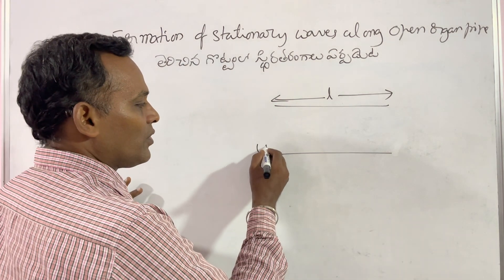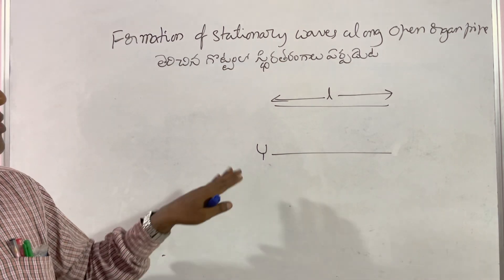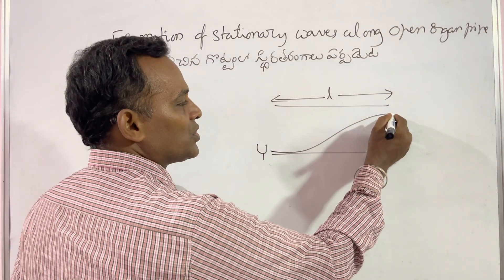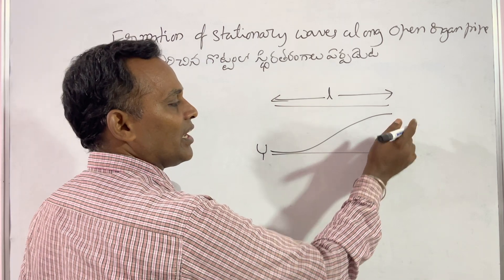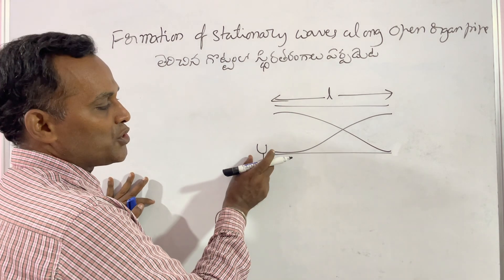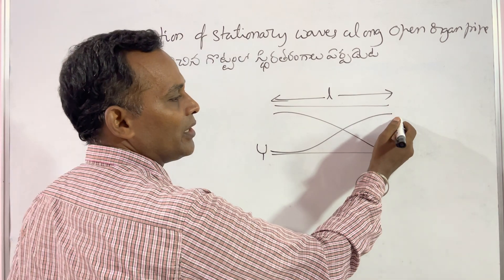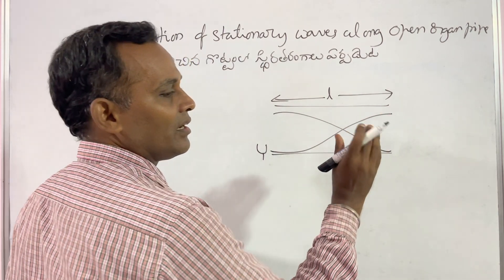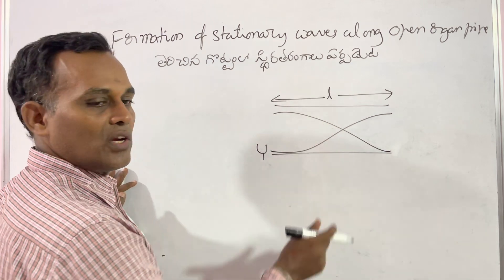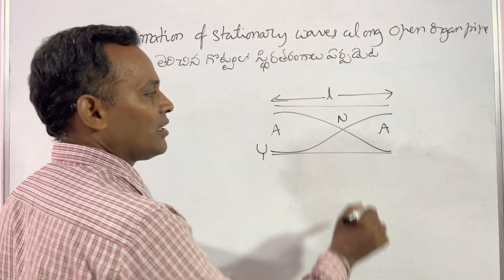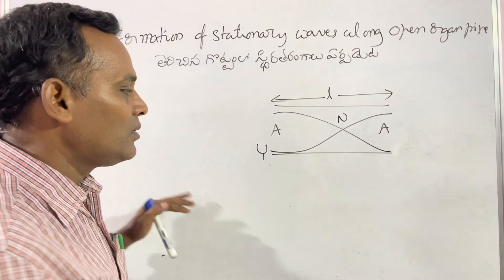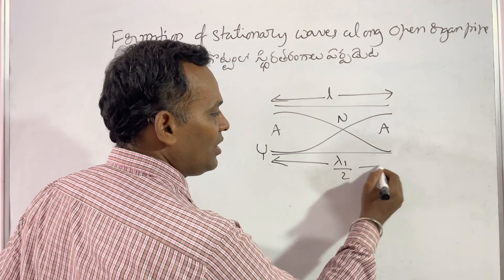A tuning fork is set to vibrate and kept at one of the ends, so a wave is produced in the tube. Due to the pressure difference between the air inside and outside the tube, the wave is reflected back. There is superposition of two waves, and the second wave segment is taken as half of the wavelength.